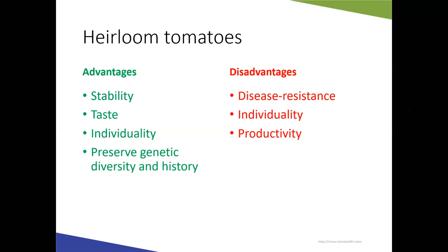Disadvantages of heirlooms include disease resistance — heirloom types often do not have as good disease resistance as hybrids, as a general rule. The individuality, while a benefit, can also be a drawback if you don't want unusual-looking or differently-colored tomatoes. And productivity — heirlooms often take a little bit longer to mature and may produce less fruit than some hybrid varieties.